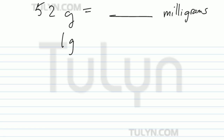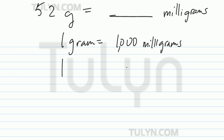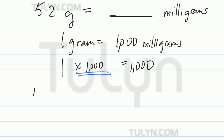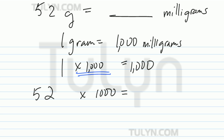Let's go ahead and review. One gram equals 1,000 milligrams. You've got to see the relationship between one and 1,000 — to go from one to 1,000, you've got to multiply by 1,000. That is your basic rule that you're going to use. Bring down your given number of grams and multiply by 1,000 to see how many milligrams there's going to be.